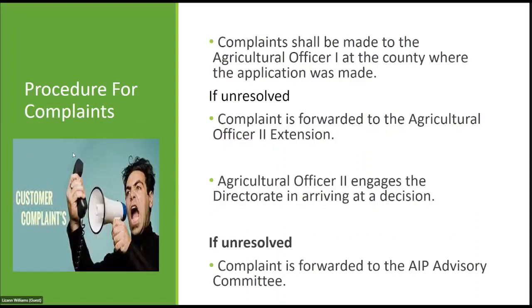Application procedures for complaints: if an application has been disqualified — the term used at the Ministry of Agriculture is DNQ, meaning 'did not qualify' — a farmer who feels they were treated unfairly and should have received the incentive may request a review. Complaints shall be made to the Agricultural Officer One at the county where the application was made. If unresolved, the farmer can move the complaint forward.